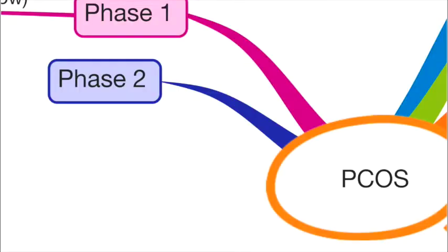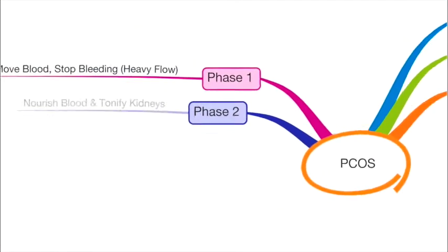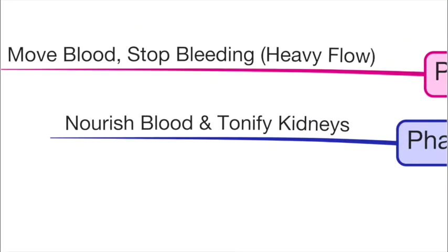The second phase is when your body is getting ready, it's making the follicles mature. That is known as follicular phase. In this phase, we need to nourish blood and tonify kidneys so that follicles can get matured properly.